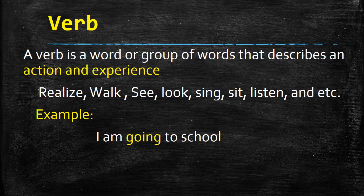Our next part of speech is verb. A verb is a word or group of words that describes an action and experience. For example: realize, walk, see, look, sink, sit, listen, etc. For example, 'I am going to school' — here 'going' is used as a verb which describes an action. I am walking, I am going, I am singing — koi bhi word jo kisi bhi cheez ke action ya experience ko biyan karta hai, us ko hum English grammar mein verb kehtay hain.